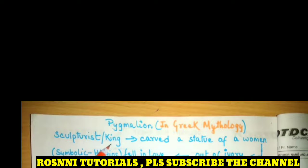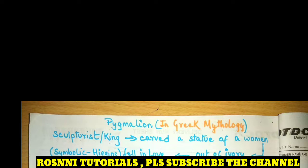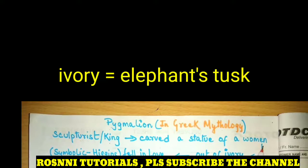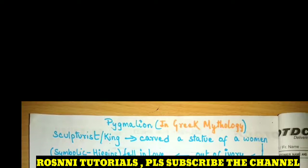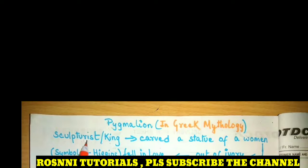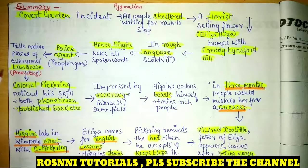In Greek mythology we find a story of Pygmalion — a king who was a great sculptor. He carves out ivory and makes a beautiful statue of a woman, and with that beautiful creation he himself falls in love. The same thing is in the play as well, where this king or sculptor is represented by Higgins.